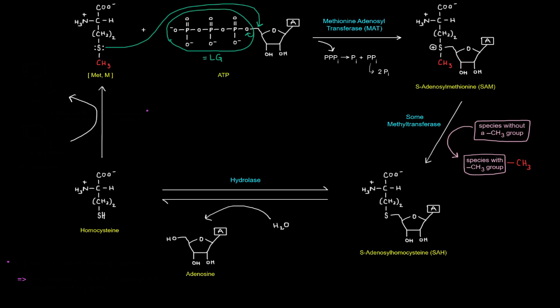So we need a methyl group donor. This is where N5-methyl-THF comes into play. So this is N5-methyl-THF. It's actually going to donate its methyl group and become THF. And this reaction requires a cofactor, coenzyme B12 or cobalamin, which is actually one of the two reactions in which this coenzyme B12 is used. And this reaction is catalyzed by methionine synthase.